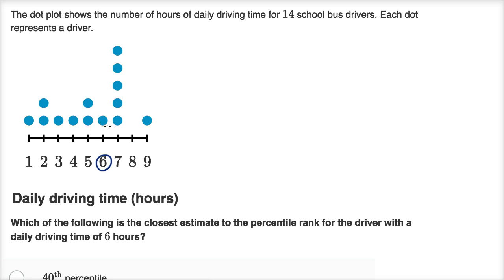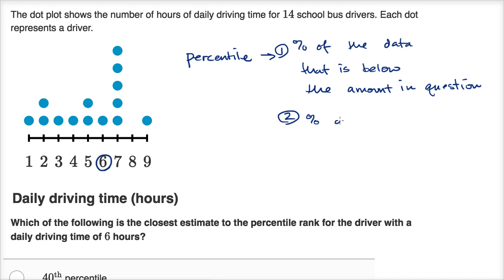Alright, now let's work through this together. So when you think about percentile, you really want to think about, so let me write this down. When we're talking about percentile, we're really saying the percentage of the data that - and there's actually two ways that you could compute it. One is the percentage of the data that is below the amount in question. The other possibility is the percent of the data that is at or below the amount in question.